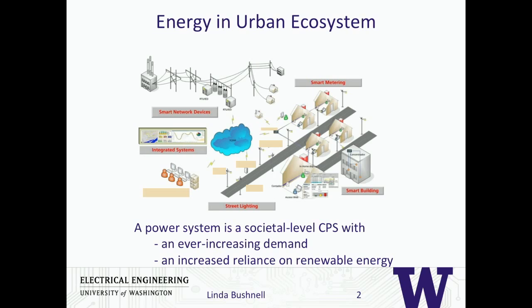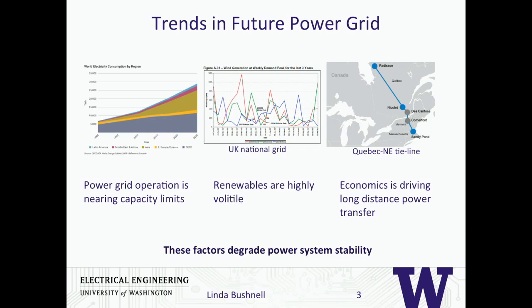The problem we're looking at in general for this work is power systems in the urban environment. The main problems we're looking at are increasing demand and also increasing reliance on renewable sources. From that perspective, you end up having some problems that we can look at as control systems engineers. The power grid is trying to supply power for that demand, approaching the limits of capacity. Renewables are all over the map in terms of volatility, and you have to try to integrate them into your system. And then you also have economic impacts, where trying to make more money by having longer distances for generation and transportation of power.